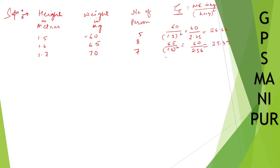And for this one also, you calculate the same thing, it will be 70 divided by 1.7 square, which will be equal to 70 divided by 1.7 into 1.7, it will be 2.89. And the answer will be 24.22.